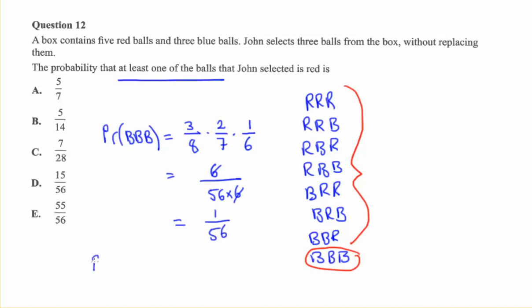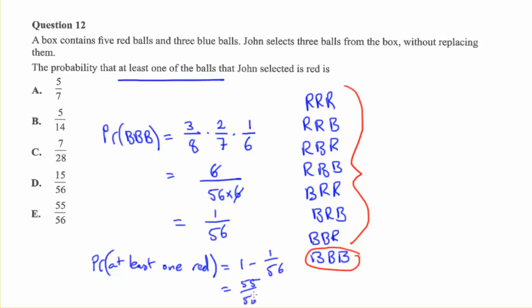So the probability that at least one is red is one minus that — it's the complement. The complement is 55 over 56, and that gives us the answer E.